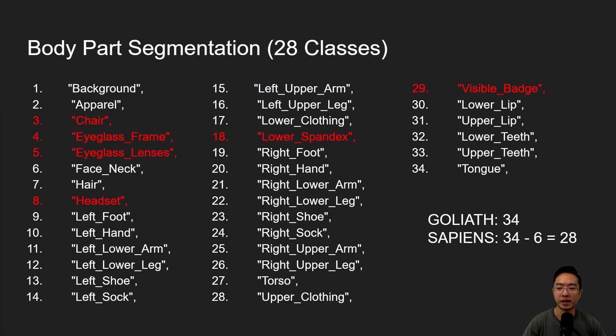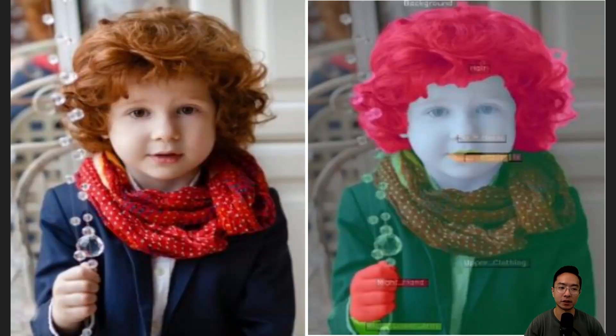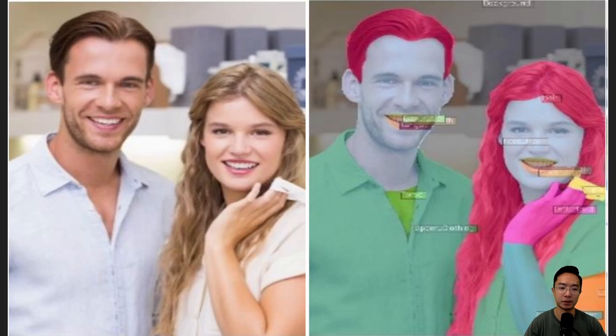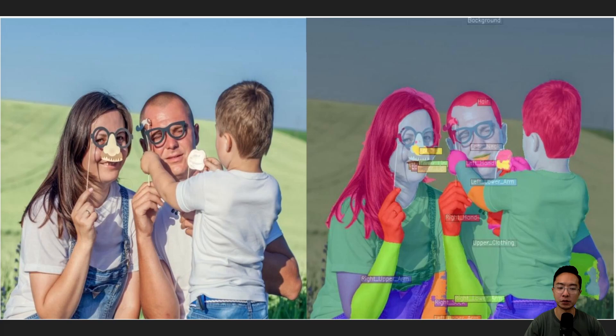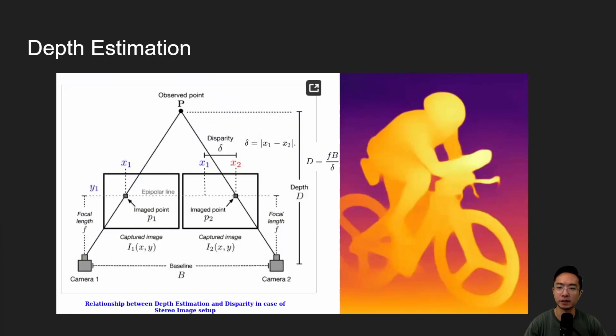So this leaves us with background, apparel, face, neck, hair, left foot, left hand, left lower arm, left lower leg, left shoe, left sock, left upper arm, left upper leg, lower clothing, and all the right equivalent. And then you have the torso, upper clothing, then lower lip, upper lip, lower teeth, upper teeth, and the tongue. So those are your 28 classes. Now here, let's take a look at some examples here. So you can see all of the different regions are segmented by different colors. So that helps visualize the different regions more easily. And you can see that overall it does a pretty good job in these test cases that we see here. Even when here they have special props going on and it still does a pretty good job. And even in different lightings, you can see there's a light in the background. So it does very well depending on the different features.